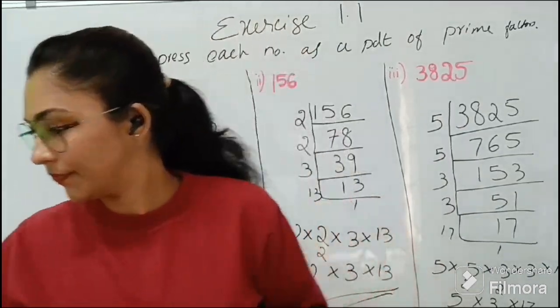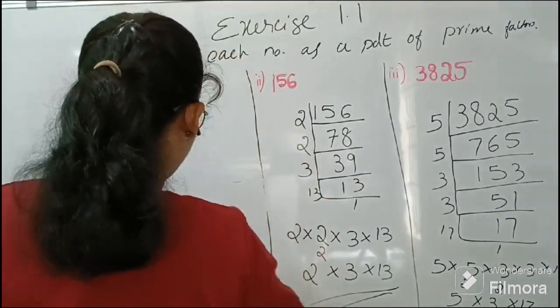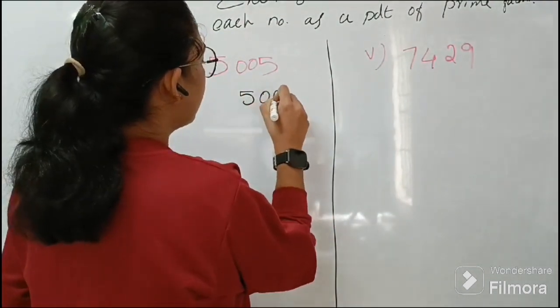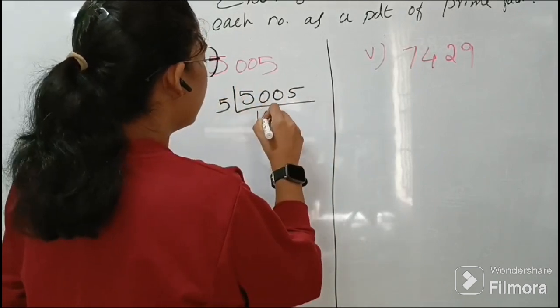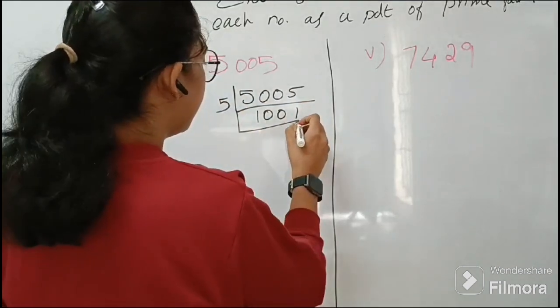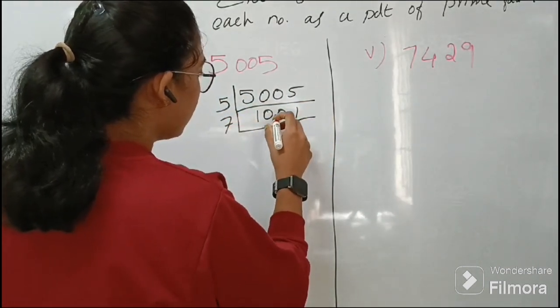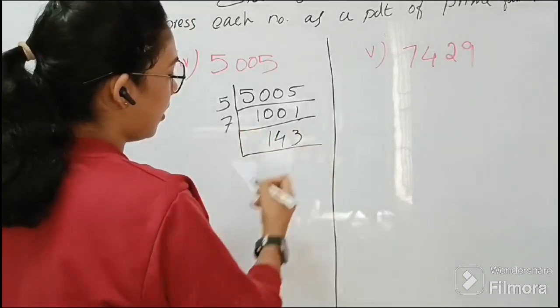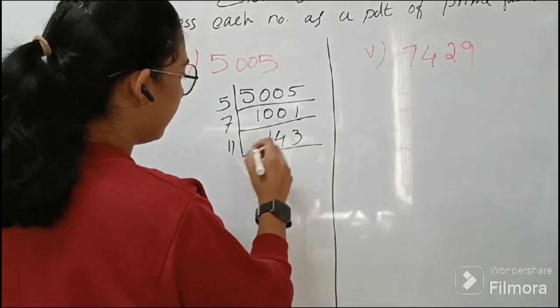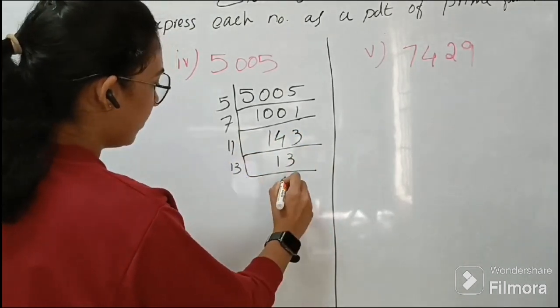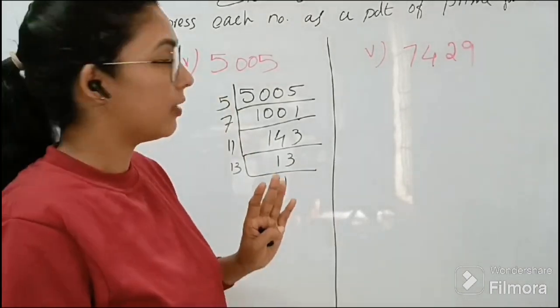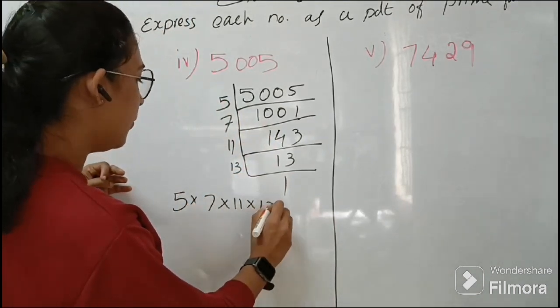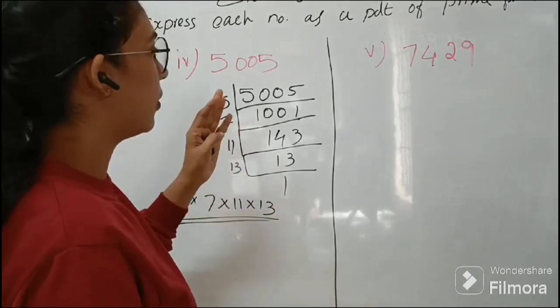And there are two more questions. The second last one is 5005. Since the ones place is 5, let's start with 5. So 5005 completely divisible by 5, that is 1001. Next is by 7, 143. So 4 sevens are 28, 3 sevens are 21, and 11, 13. So factors of 5005 is 5, 7, 11, 13: that is 5 into 7 into 11 into 13. So these are the factors of 5005.